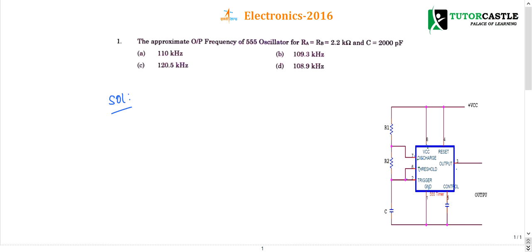It is given that it is a 555 oscillator, and also the information of Ra, Rb and C. Whenever 555 timer and Ra, Rb and C information is given, it is understood that it will act as an astable multivibrator.